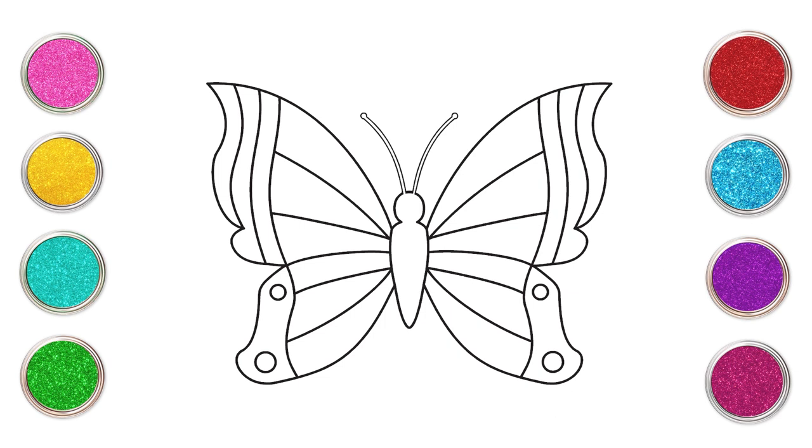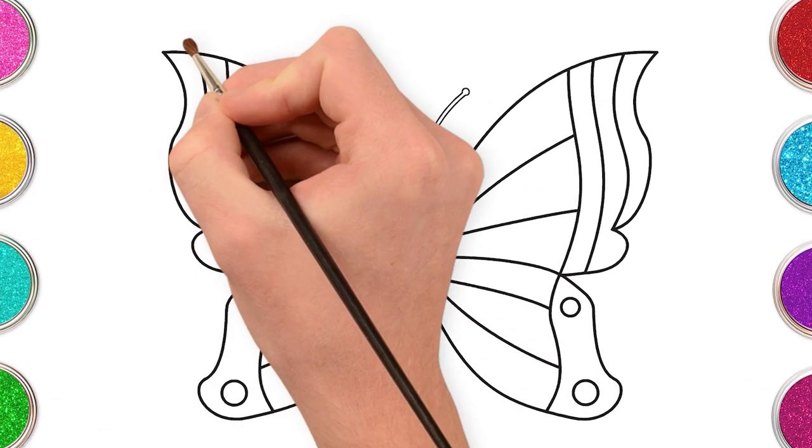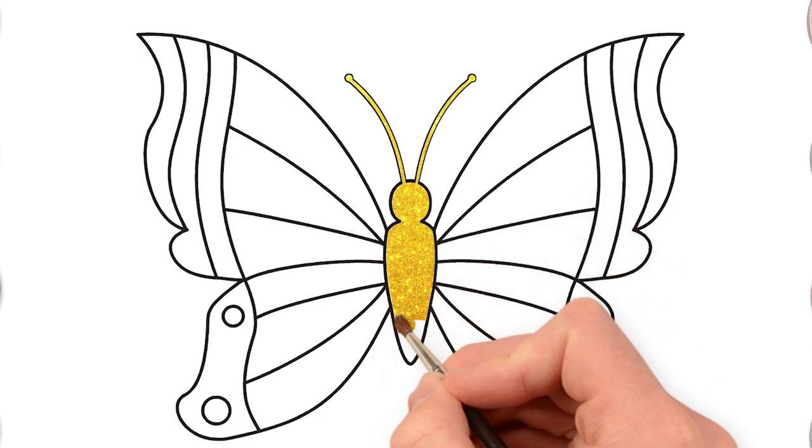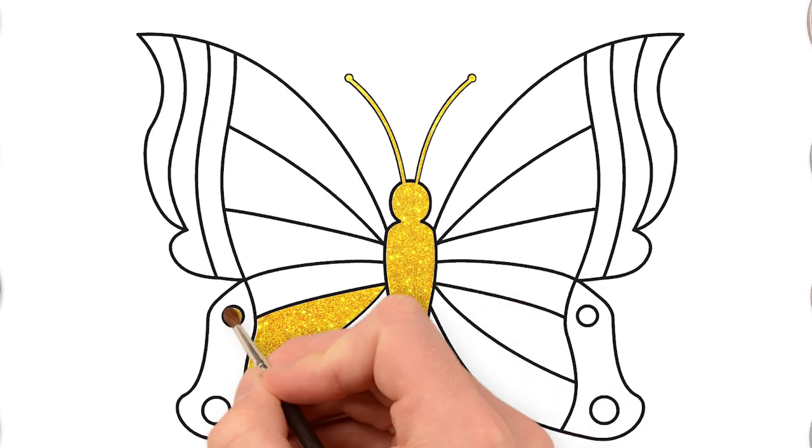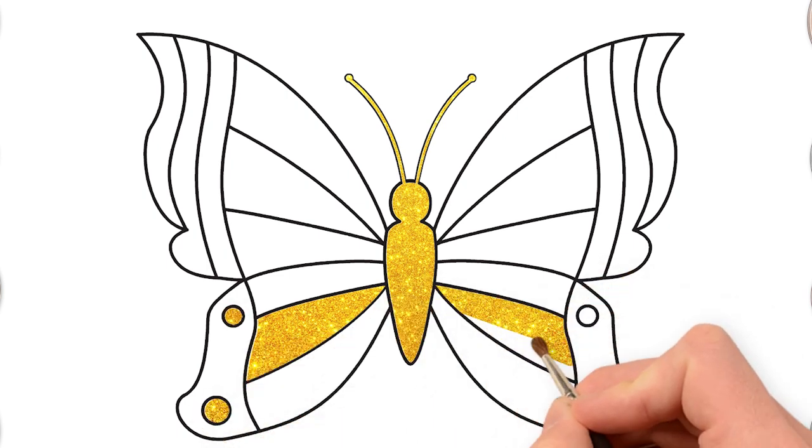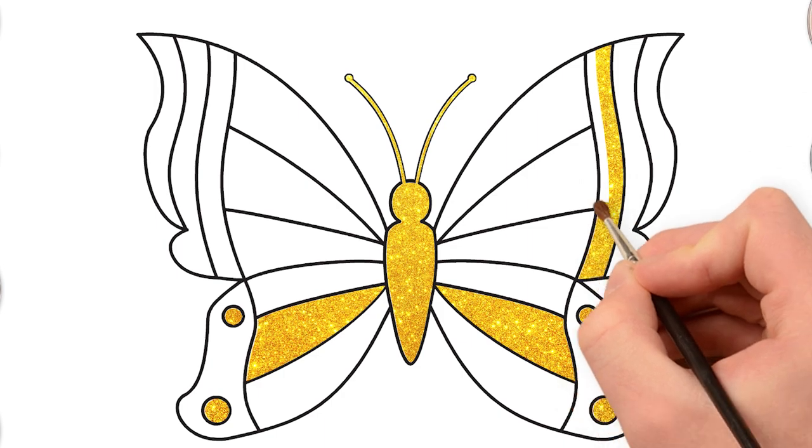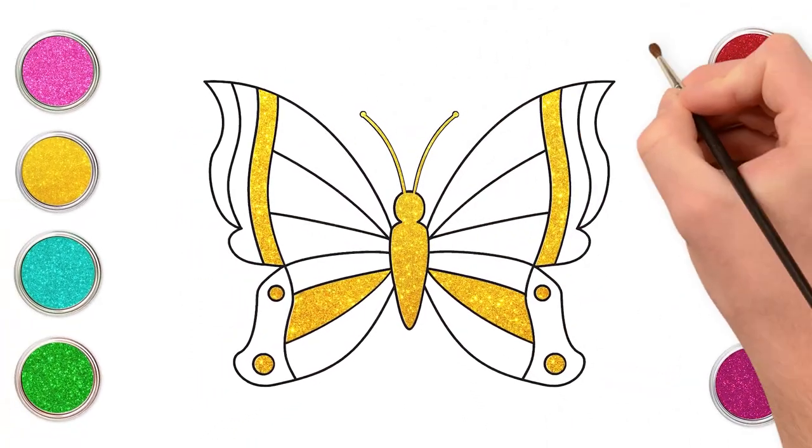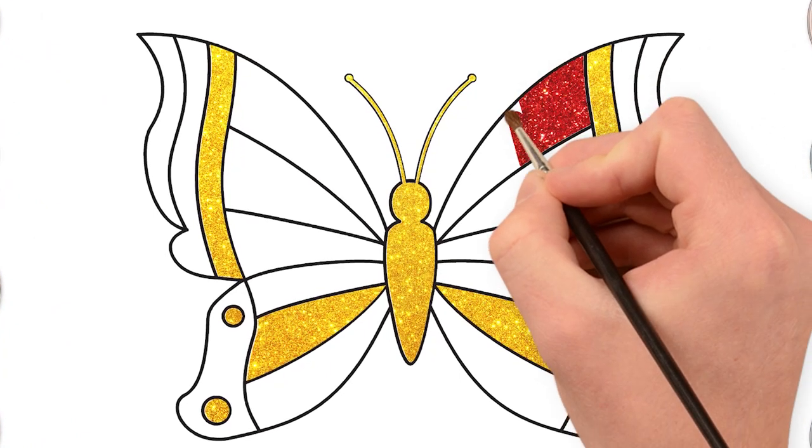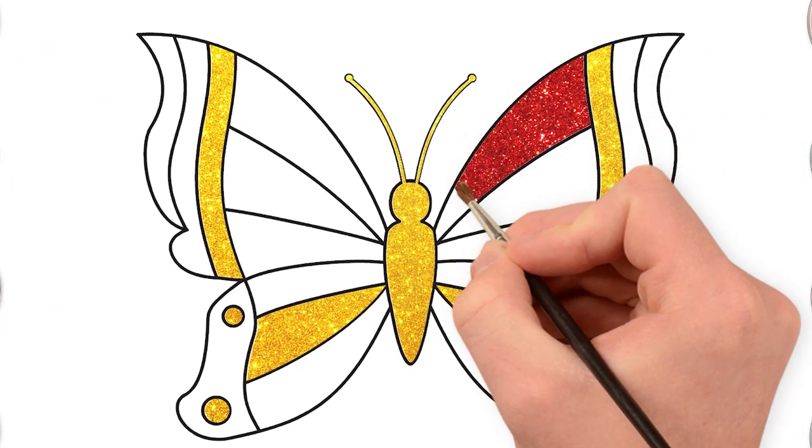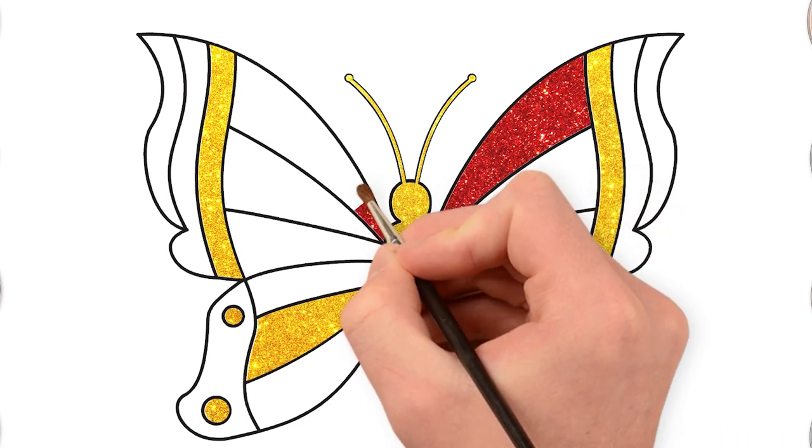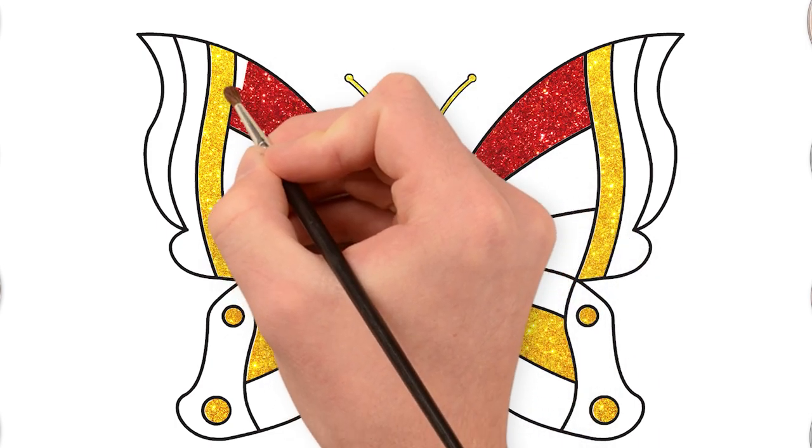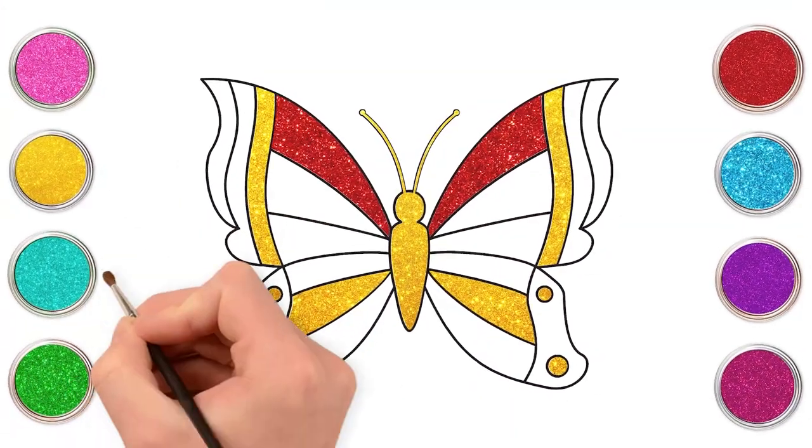Time to paint! Let's start with a beautiful golden color to fill in the body and some of the details too. On to some red color. Yellow. And green.